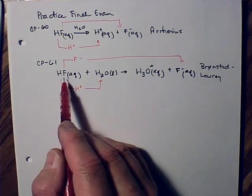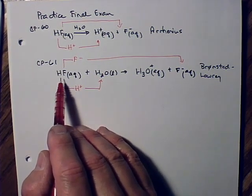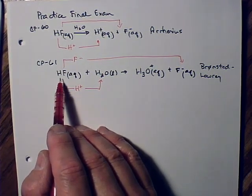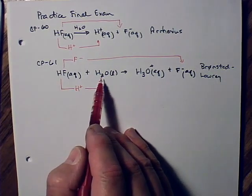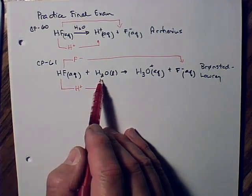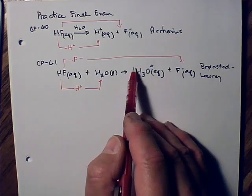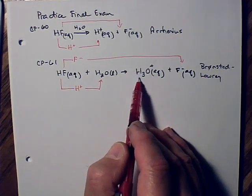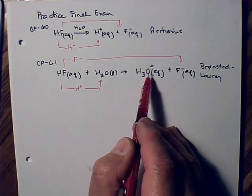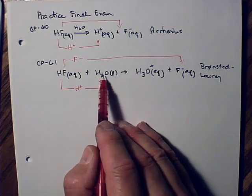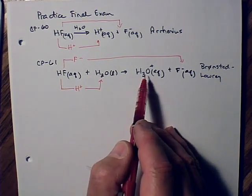It is dissolved in water, so we call it aqueous, and since what we did was to split up hydrofluoric acid, then the fluoride ion is over here by itself. All right, so this is the Bronsted-Lowry system, and this is the Arrhenius system up here.